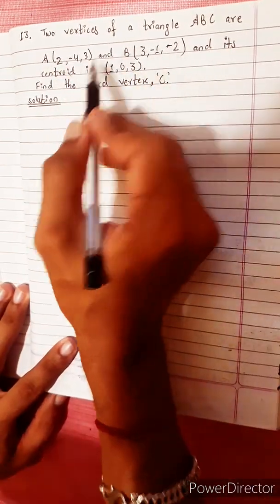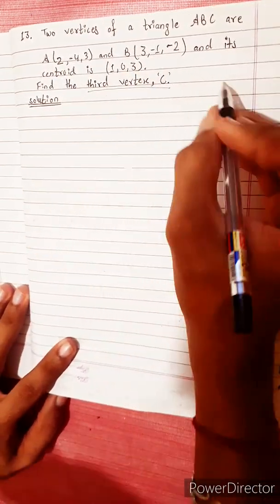Two vertices of a triangle ABC are given. Find the third vertex.